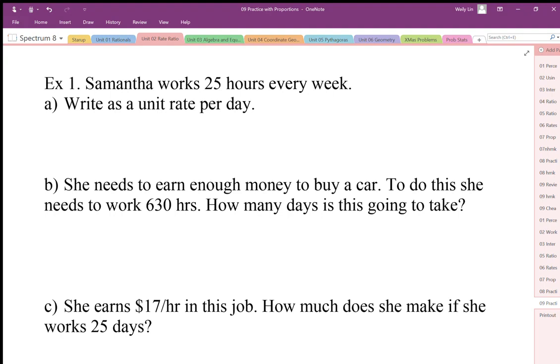Here Samantha works 25 hours every week, so we want to find this out as a unit rate per day, or how much on average she would work per day. What we can do is just write out her 25 hours and we can just convert our week to days, so divided by 7 days.